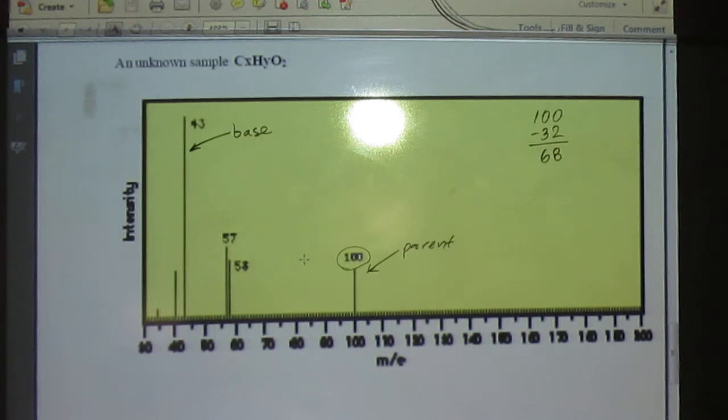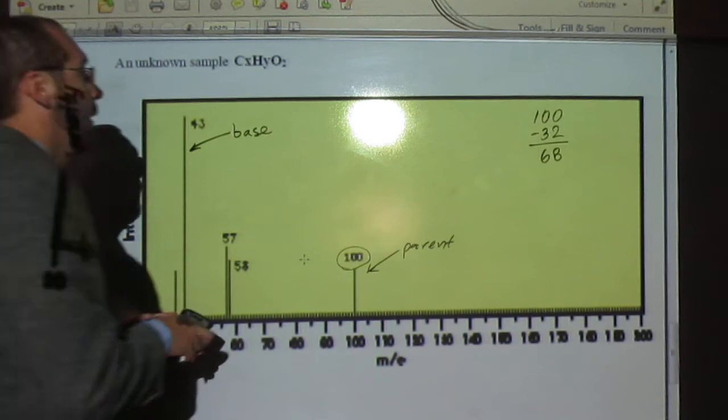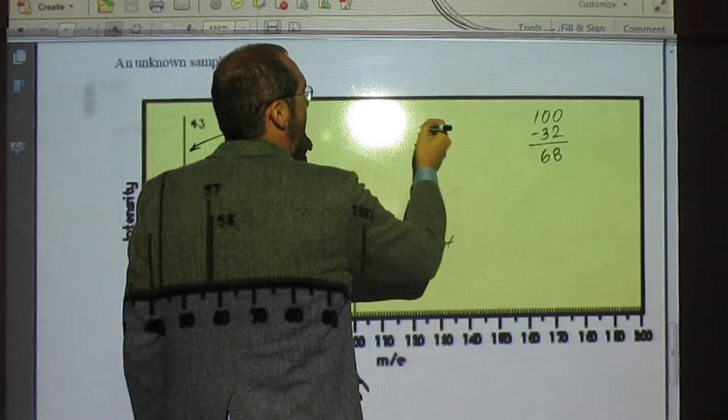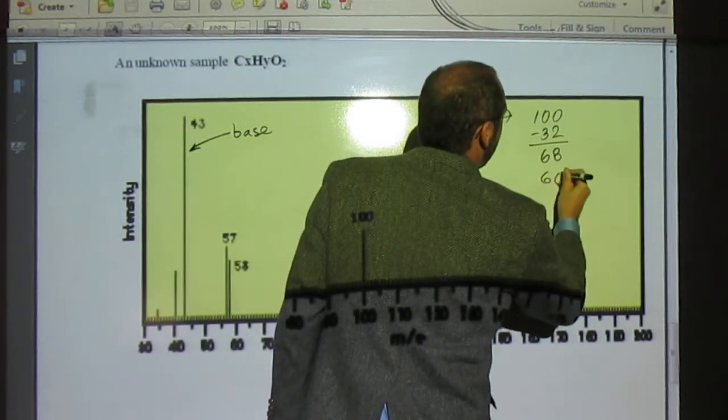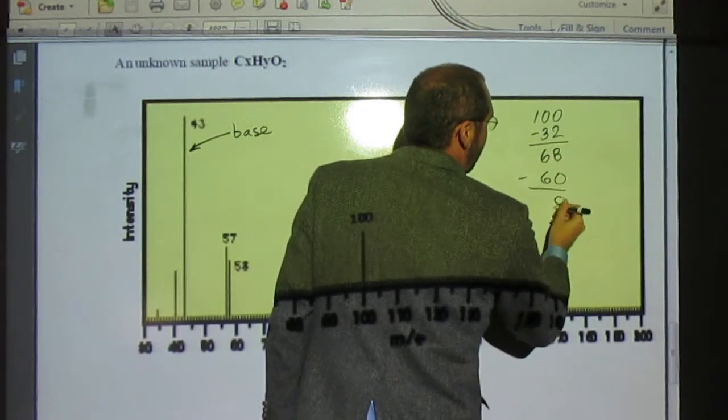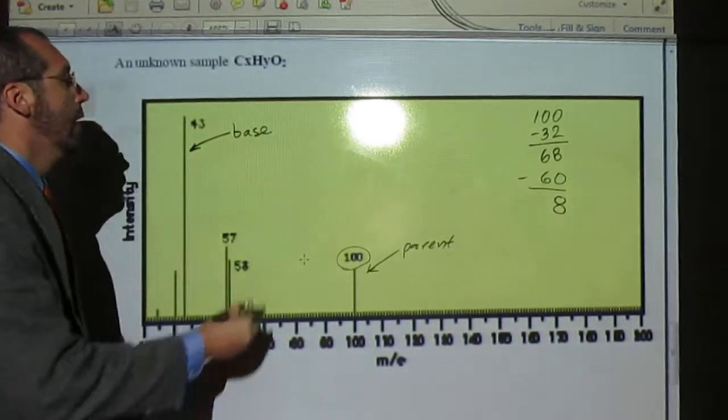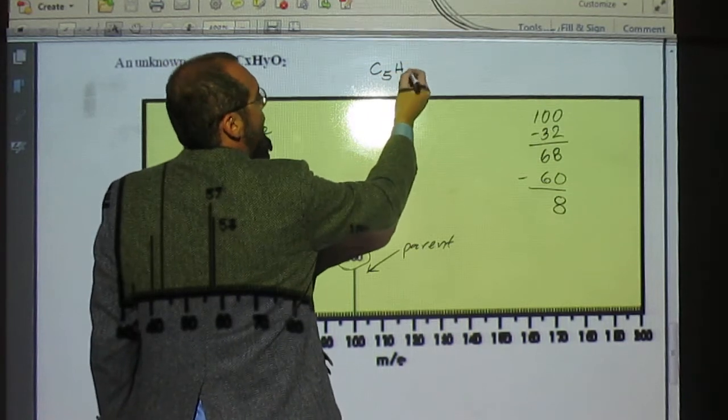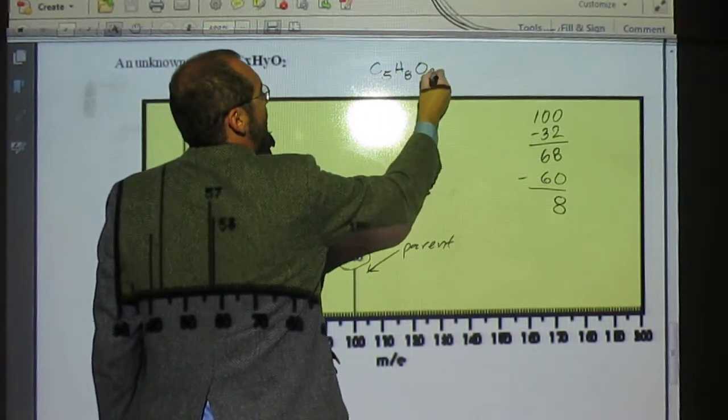68 divided by 12, you don't get 5, you get 5.66666, right? But we can't have 5.666 carbon atoms, so we're just going down to 5. So we say 5 times 12, that's going to be 60. So 68 minus 60 is going to be 8. So, our molecular formula is probably C5H8O2.